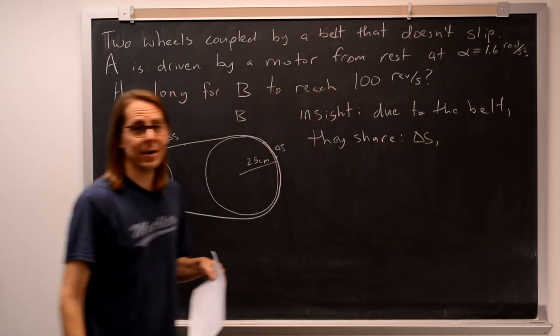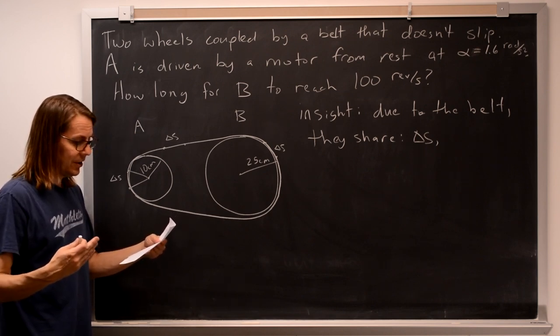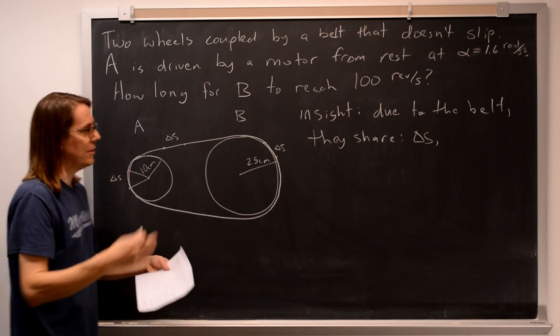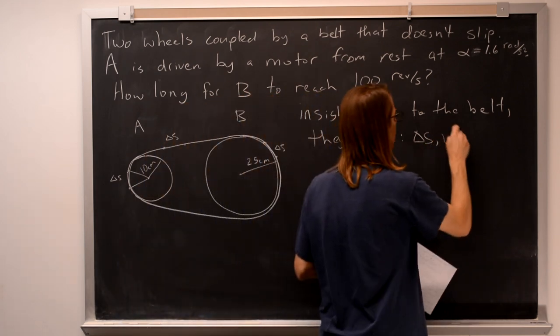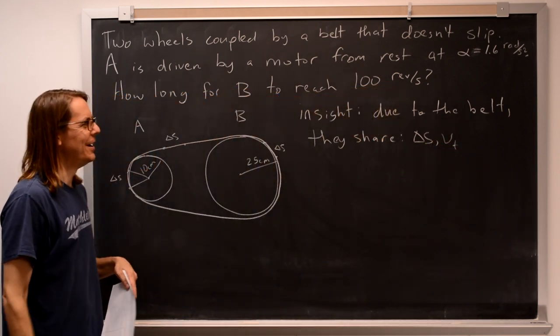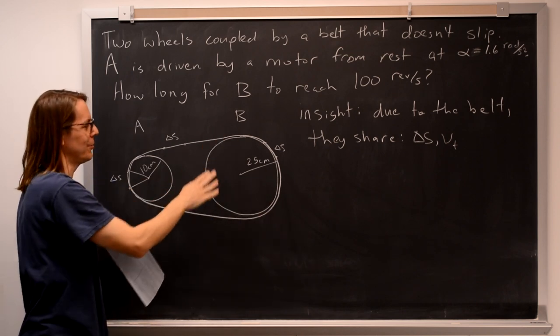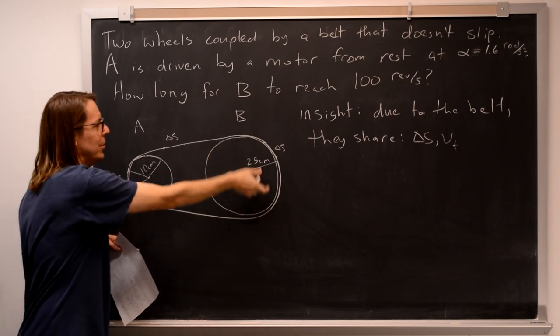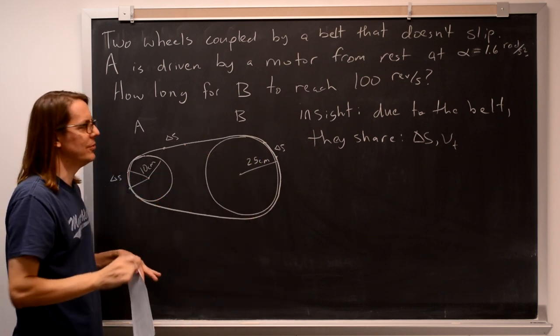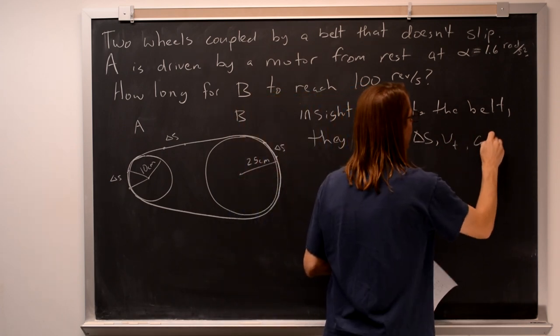And therefore, if we take a derivative, the same thing is true. So the derivative of delta S, or a little arc length, is the tangential velocity. Did you think omega? That's the derivative of theta. But that theta is not the same, because they have different circumferences. It's this little arc length, the belt makes the tangential properties the same. So they share Vt, and they also share the same tangential acceleration.